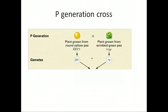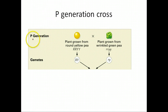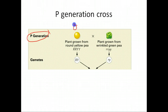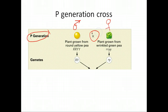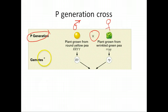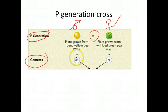Going over the basic biology here: when we do a cross, we're taking two organisms and mating them. So when you take this male pea plant and this female pea plant, you cross them — you do a cross fertilization like Mendel did. To do this, we need to determine what sort of gametes this male and this female can offer.